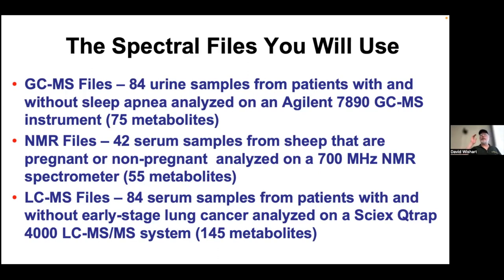The third study has 84 serum samples from patients with early stage lung cancer and controls. Lung cancer is normally quite fatal and usually not discovered until stage three or four, but can be cured quite routinely if identified at stage one. Unfortunately, we don't have any markers to do that. This study aims to identify markers for early stage lung cancer, and I hope when you do your study tomorrow you will find them.